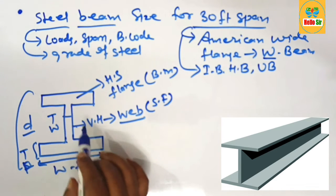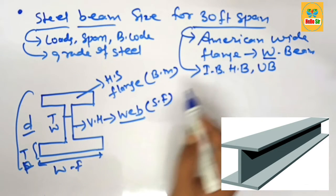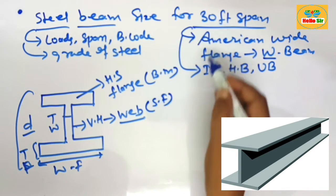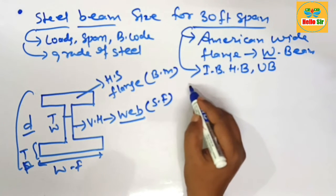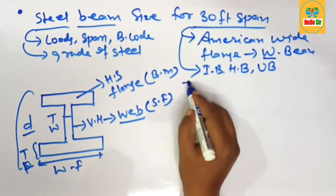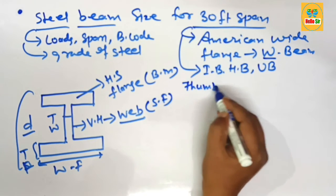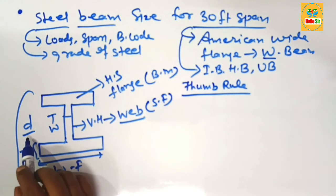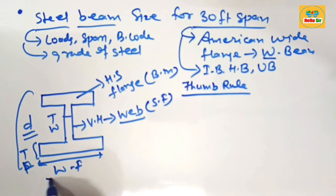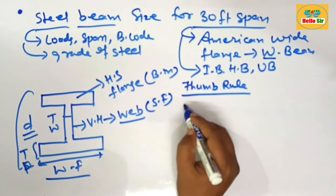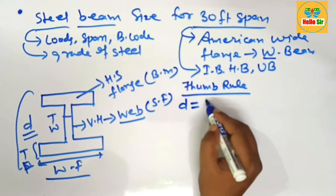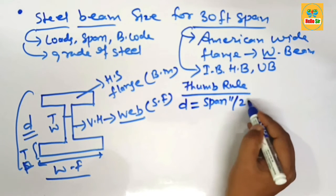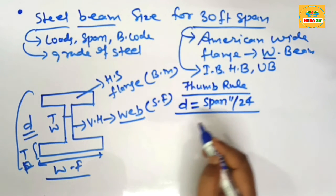Here we calculate the steel beam size required for 30 foot span. We find according to thumb rule what are the thumb rule for sizing of steel beam. Sizing of steel beam means you have to find out what are the depth and what are the width of flange.